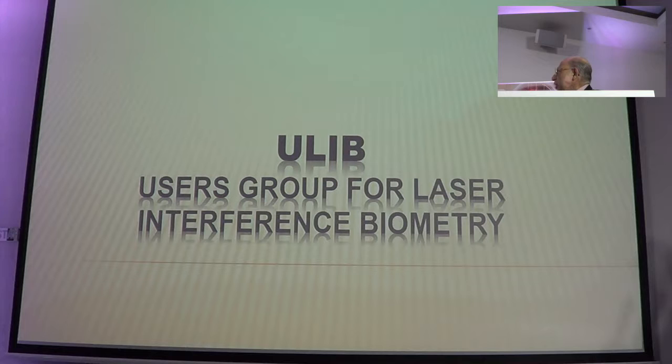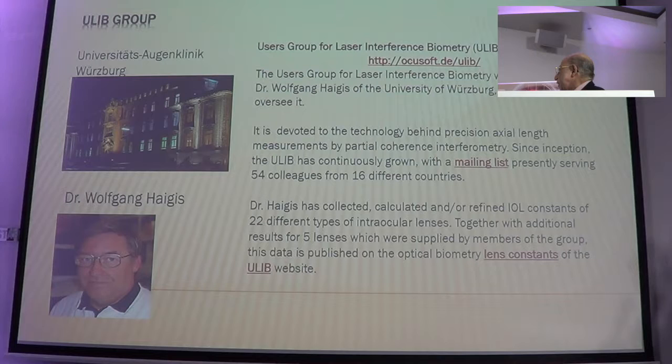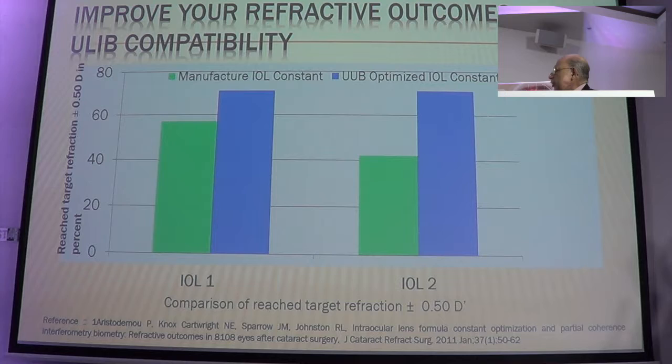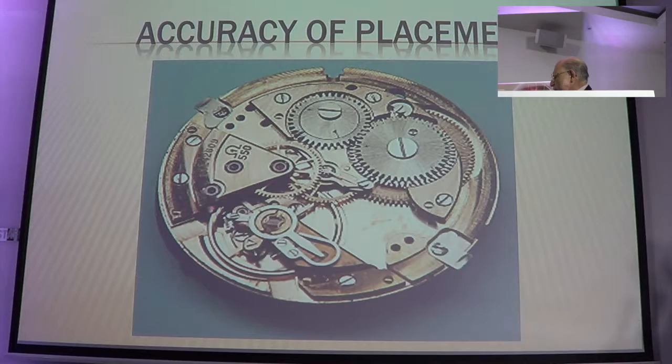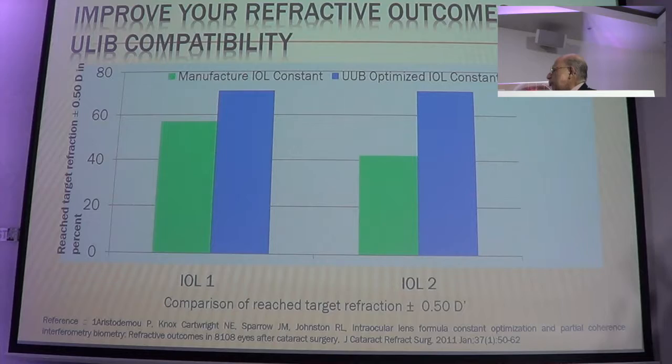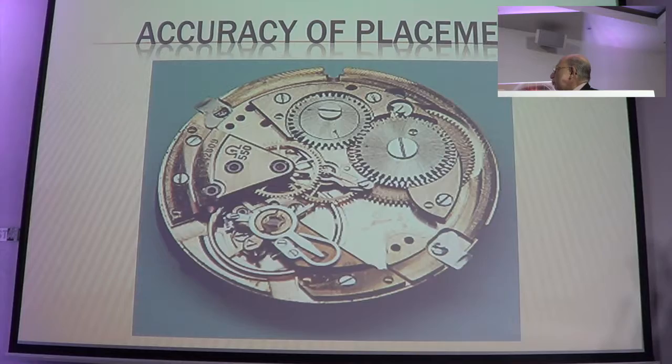ULIP stands for User Group for Laser Interferometry Biometrics — you can find it on the internet. It was developed in Würzburg. You have Excel-based tools and Professor Haigis who has done initial work. You can just input your data from the last 50 cases, and then work out your results, which enables you to achieve an accuracy still higher than otherwise possible. You use the target formula and apply the ULIP sum, and you will find that the accuracy is great.